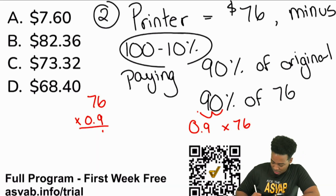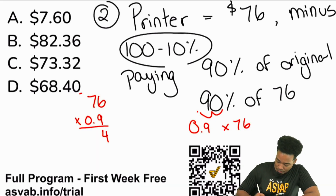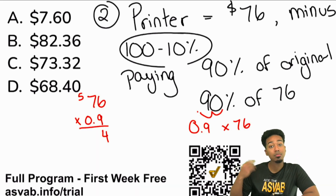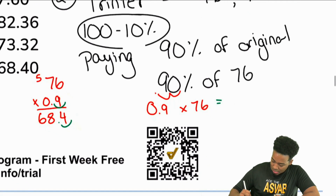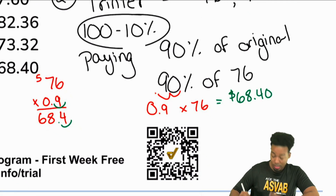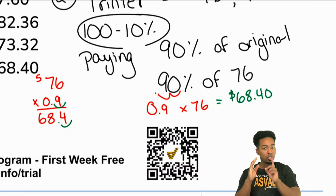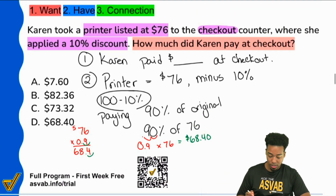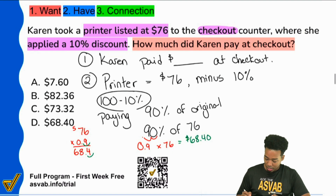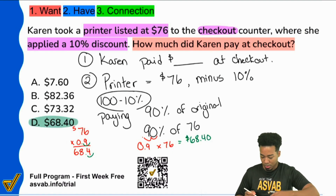6 times 9 is 54. 7 times 9 is 63. Carry the 5, that's 68. We move the decimal place back, and that's $68.40. That's the correct answer — but let me show you a quicker way to do this.